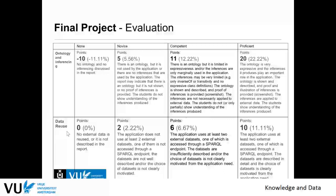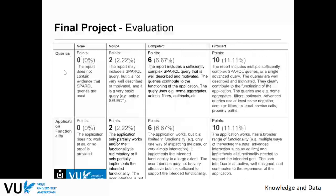For data reuse, one of the criteria is that you use more than two external data sources. If you do not use any external data sources, you will get zero points for this criterion. If you use at least two datasets, of which one is from a SPARQL endpoint, but they are not very well described and the choice of dataset is not clearly motivated, you get 6 out of 10 points. If it is clearly motivated and one is accessed via a SPARQL endpoint, you'll get max points. For SPARQL queries, they need to be sufficiently complex, multiple, and use advanced features like aggregates, filters, optionals, complex filters, external service calls, and property paths — then you get max points.